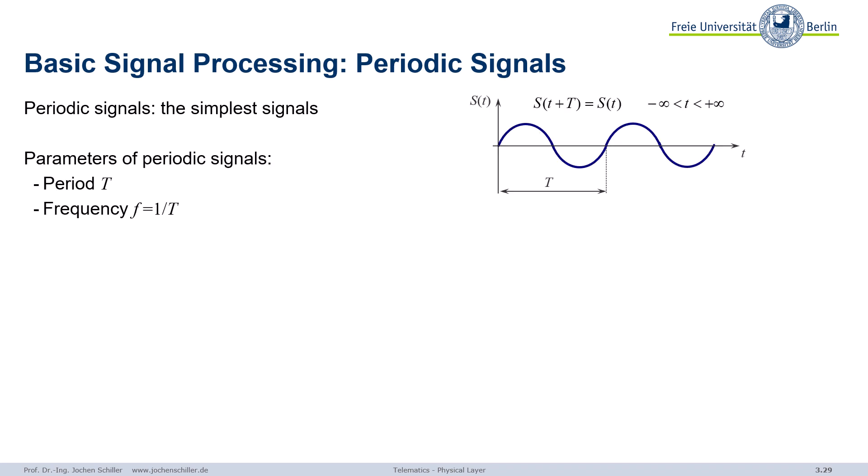How are those signals characterized? You have a period T — that's the period here, from this point to that point. The period T is basically the reciprocal of the frequency. The period indicates the duration of one cycle; the reciprocal is the frequency, specified in hertz — that's what you hear when people say something and that gigahertz. That's the frequency.